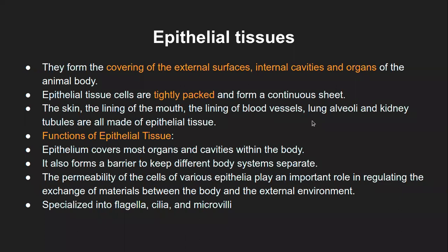Lung alveoli and kidney tubules — that is the nephron structure — also have epithelial tissue. Imagine a kidney which has to filter the blood and allow urine to separate from the blood after various absorption and reabsorption processes. That function is done by the epithelial tissue of the kidneys, ultimately of the nephron. These are the different structural and functional aspects of epithelial tissue.